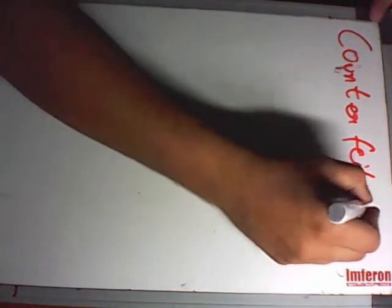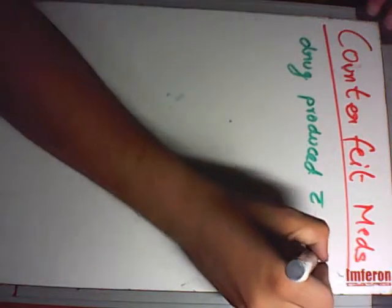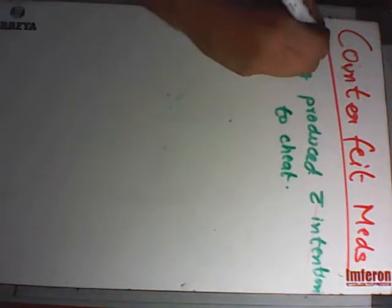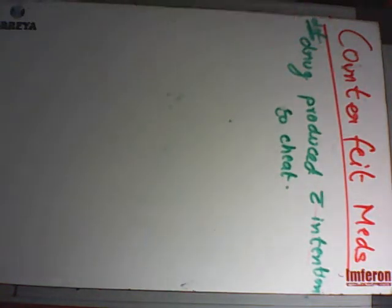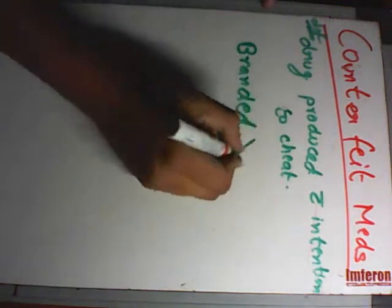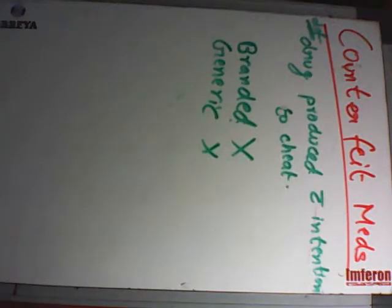We now come to the second part of the chapter: counterfeit drugs. Counterfeit medicines are those medicines which are produced with the intention to cheat. Both branded drugs and generic drugs can be counterfeit medicines.